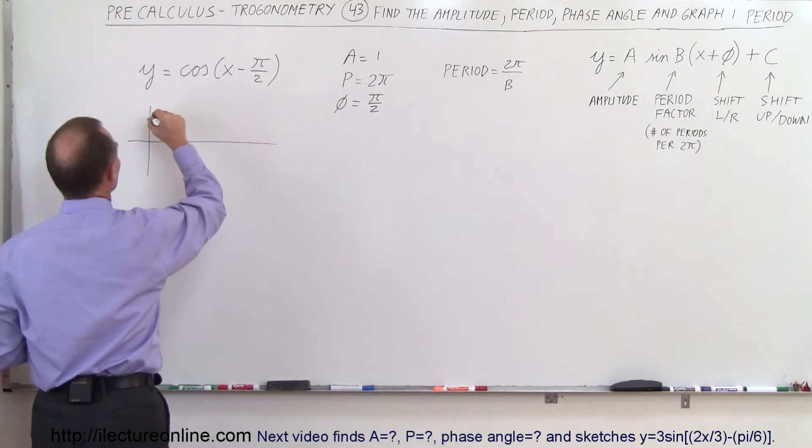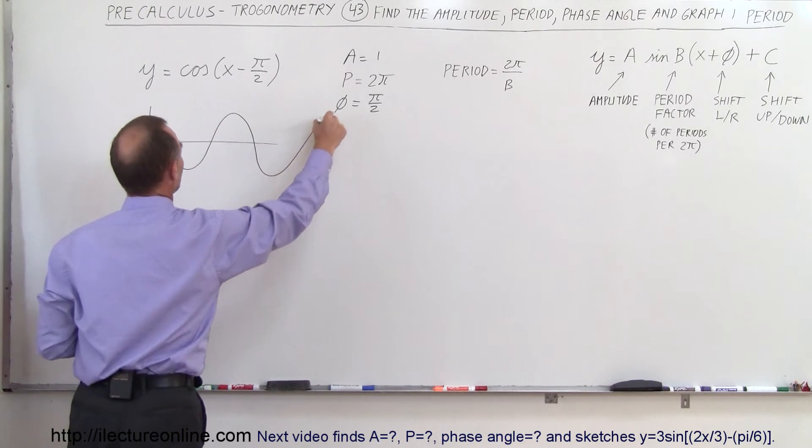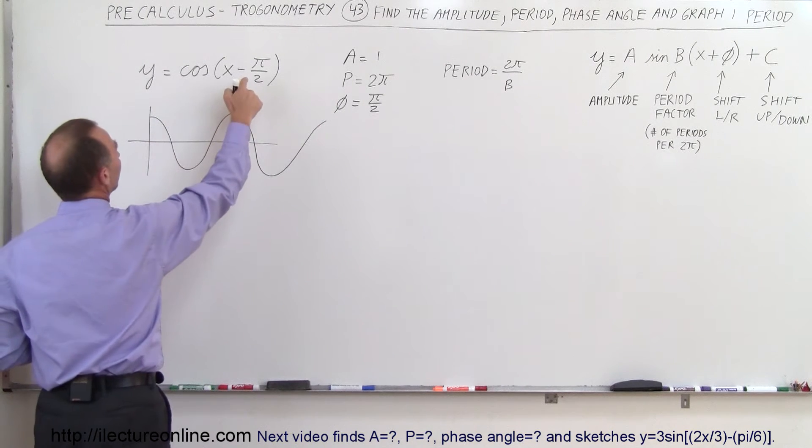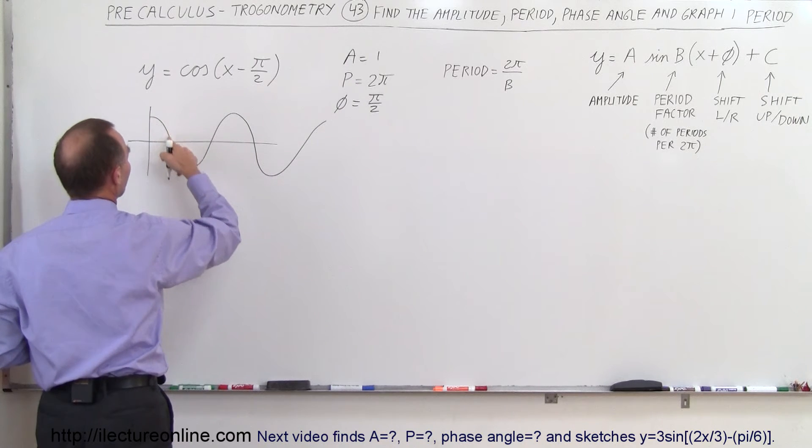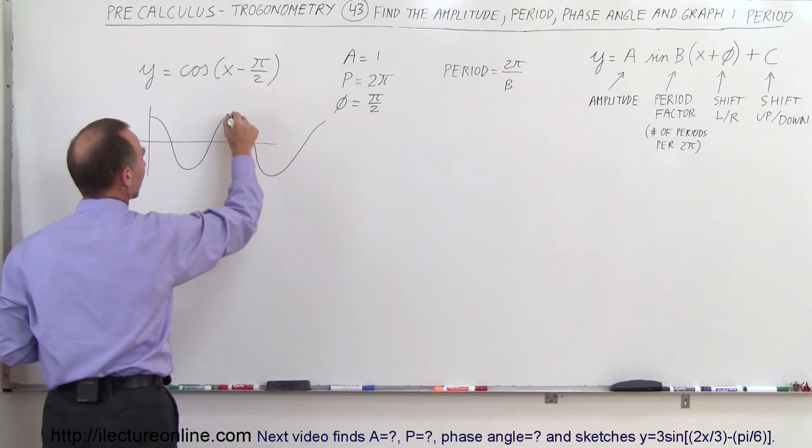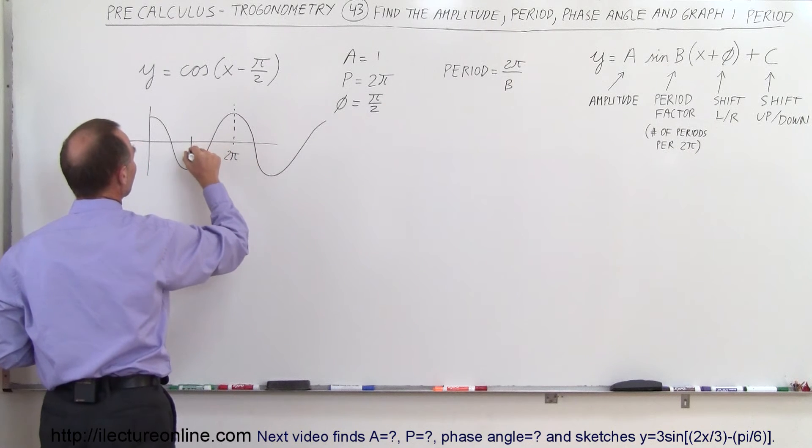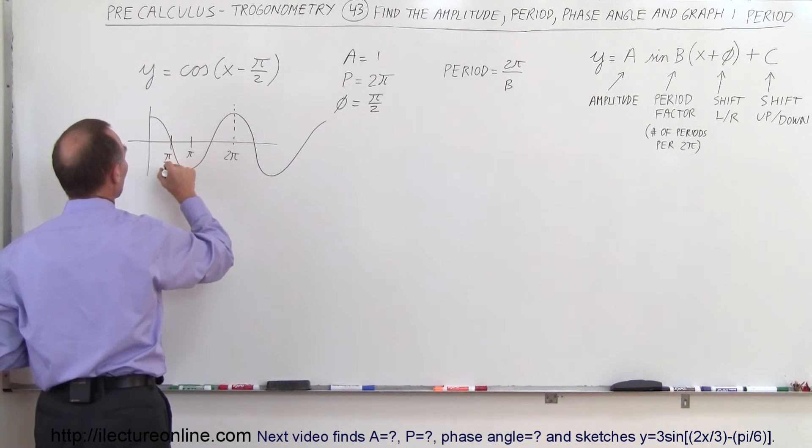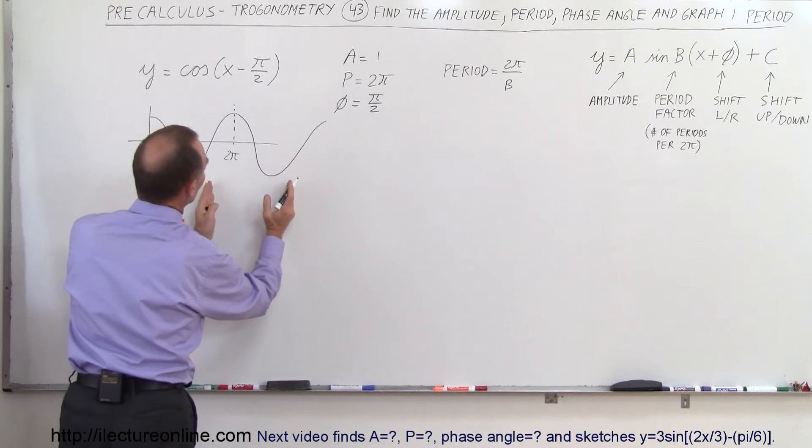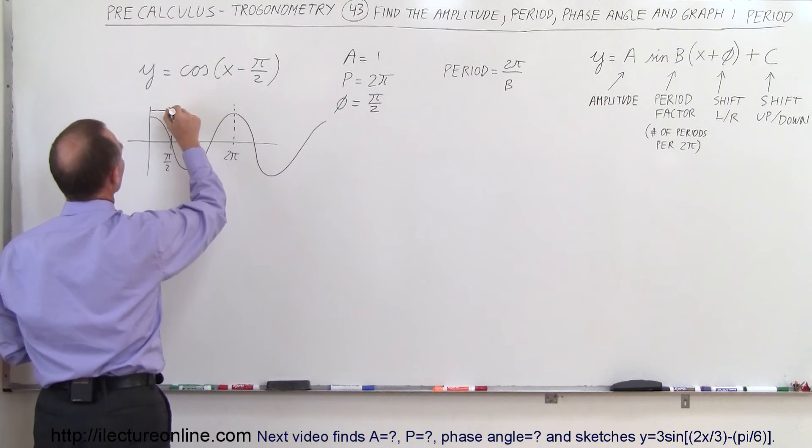function, it looks like this. The phase angle is π/2. Remember, a complete period like this equals 2π. That means this here equals π, and this equals π/2, which means the whole function is shifted to the right by